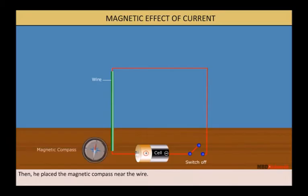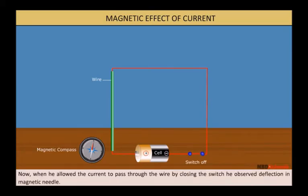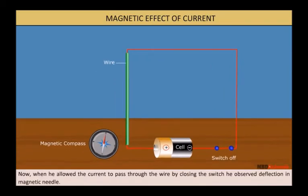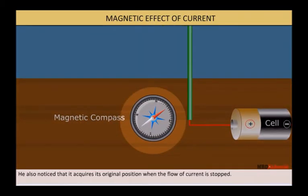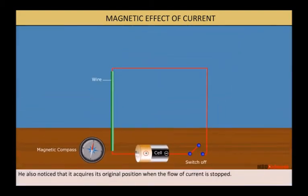Then, he placed a magnetic compass near the wire. Now, when he allowed the current to pass through the wire by closing the switch, he observed deflection in the magnetic needle. He also noticed that it regains its original position when the flow of current is stopped.